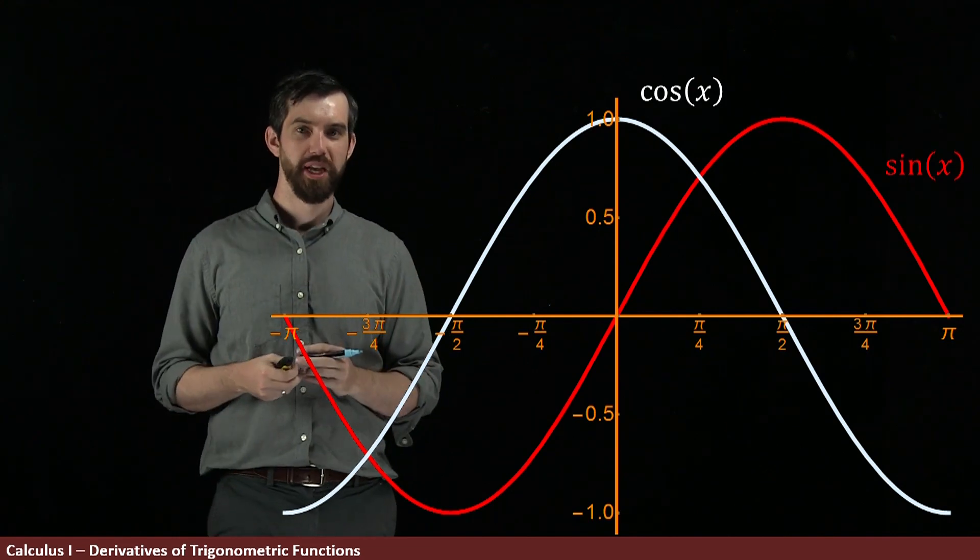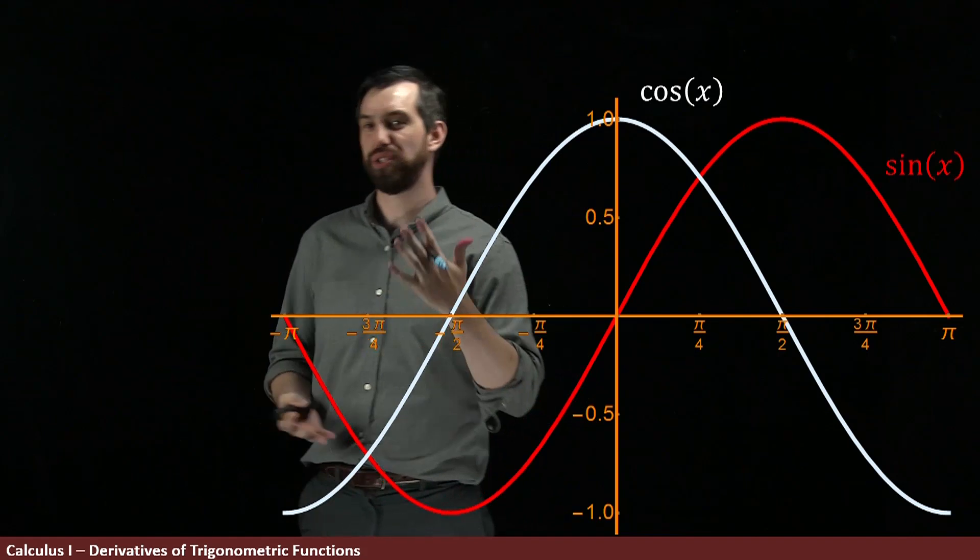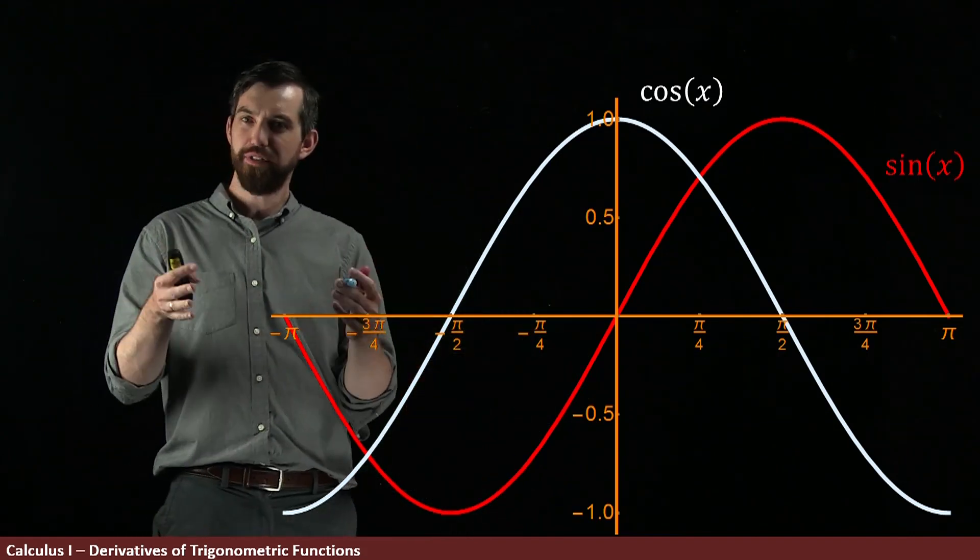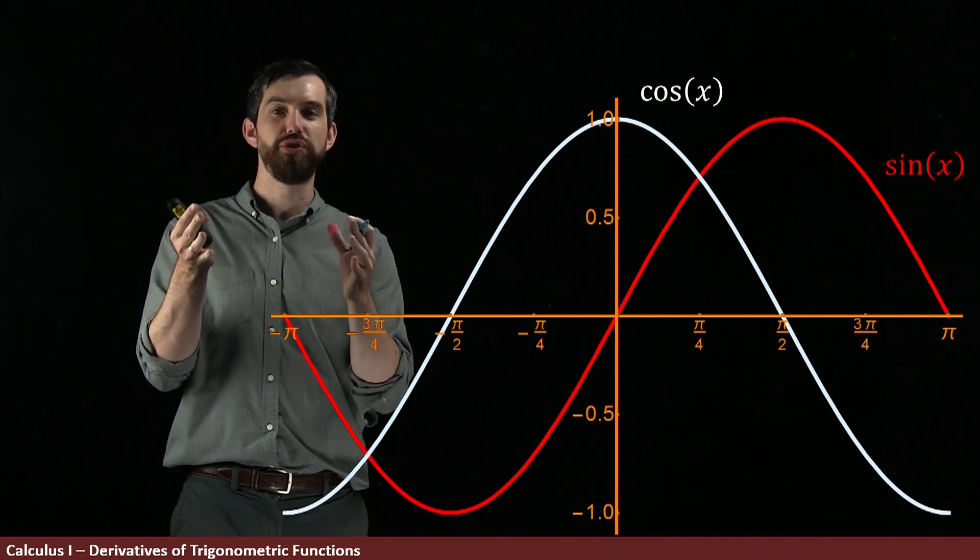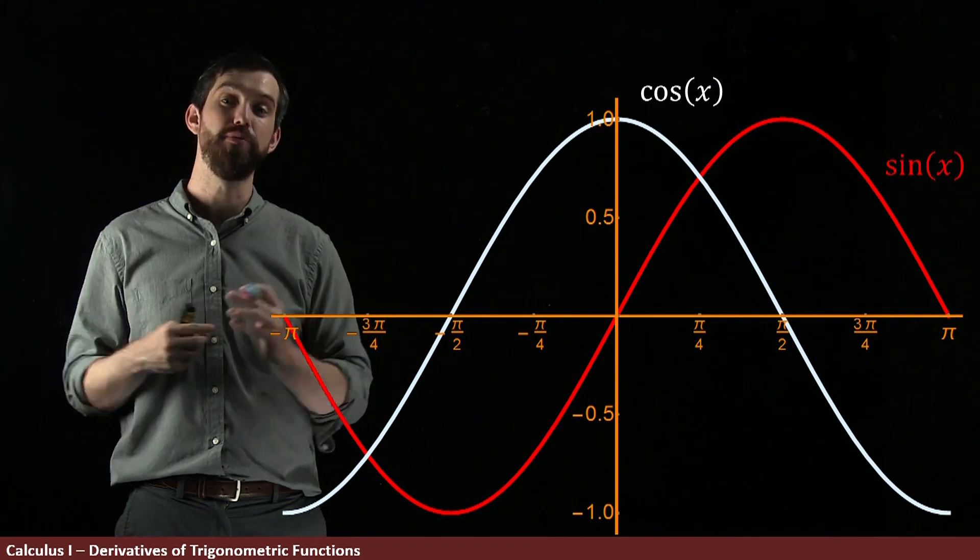What about the trigonometric terms? Here I've got a graph of cosine and a graph of sine, and I want to figure out what's the derivative of sine and what's the derivative of cosine. Now in this video, I'm not going to go through the formal geometric proof of these derivatives, but I want to illustrate why my answers are going to be reasonable.